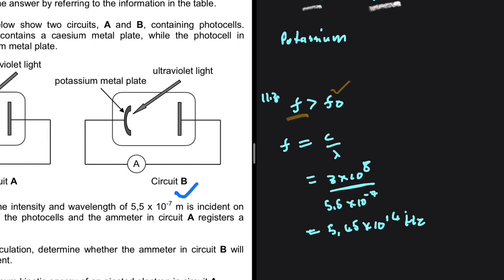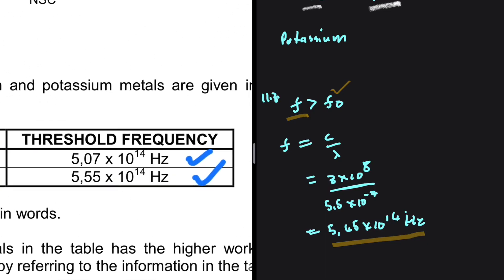This is the frequency of the light incident on the metal. The threshold frequency of potassium is 5.55 × 10¹⁴ Hz, while the frequency of the incident light is only 5.45 × 10¹⁴ Hz — less than what is required. So electrons are not going to be emitted, and as a consequence the ammeter in circuit B will not show a reading.